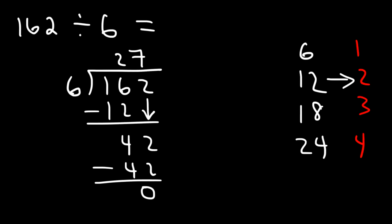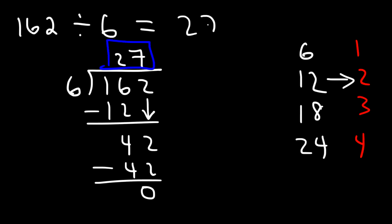And so 162 divided by 6 is 27. That's how you can do basic division.